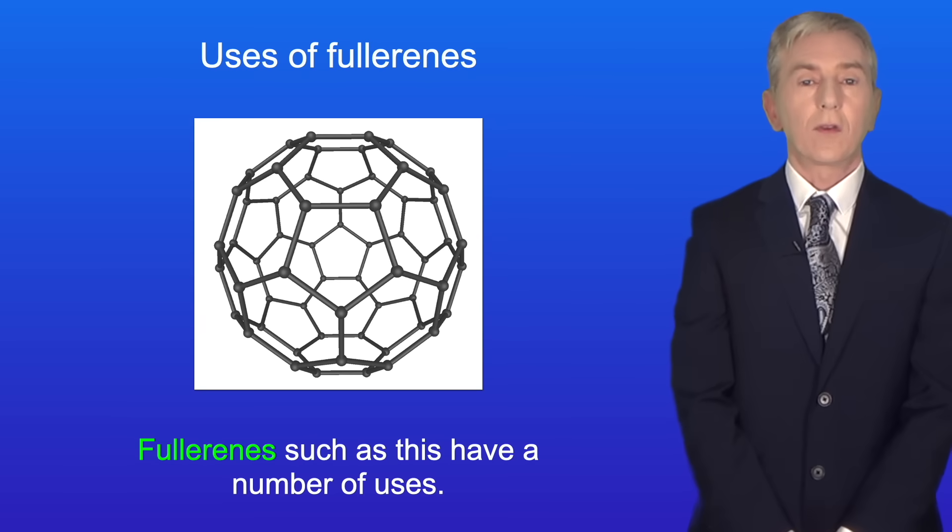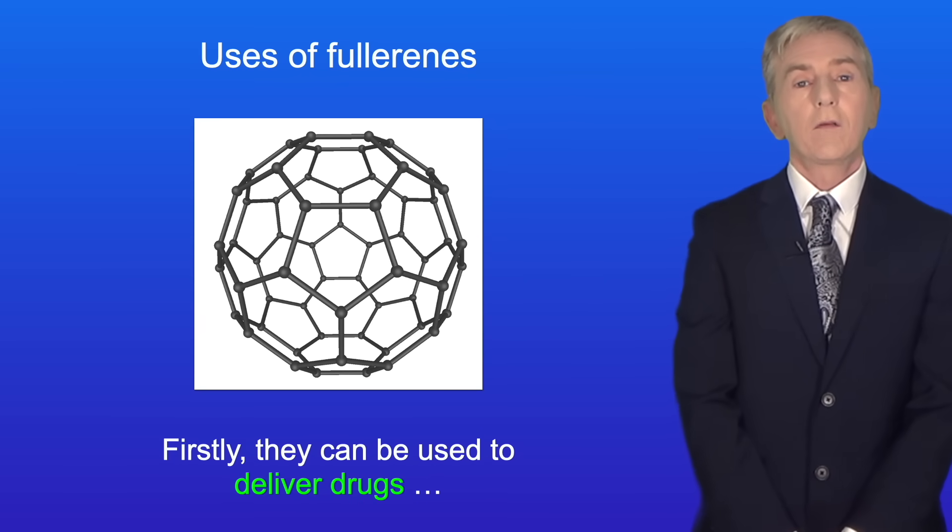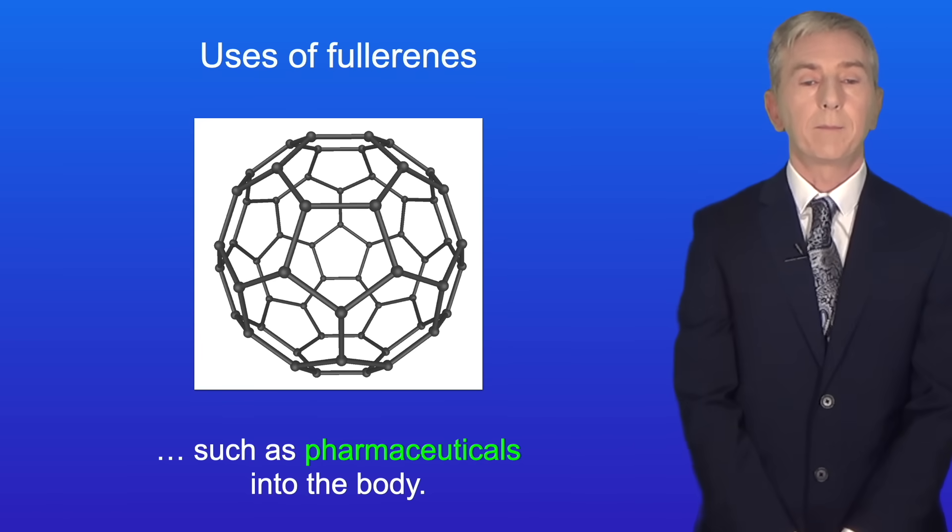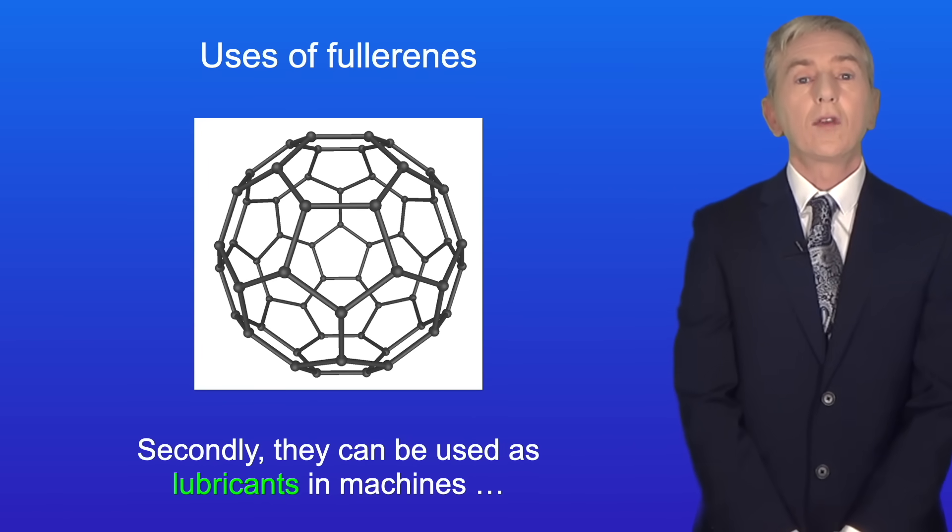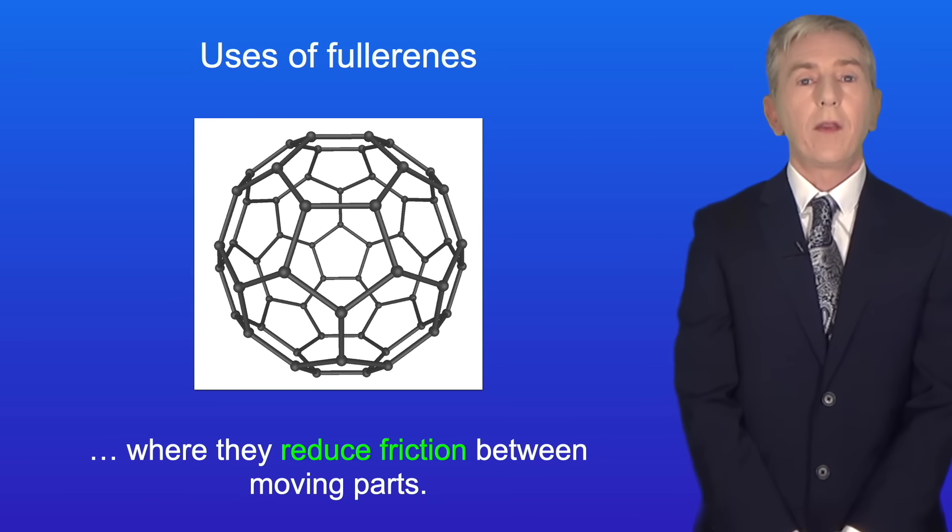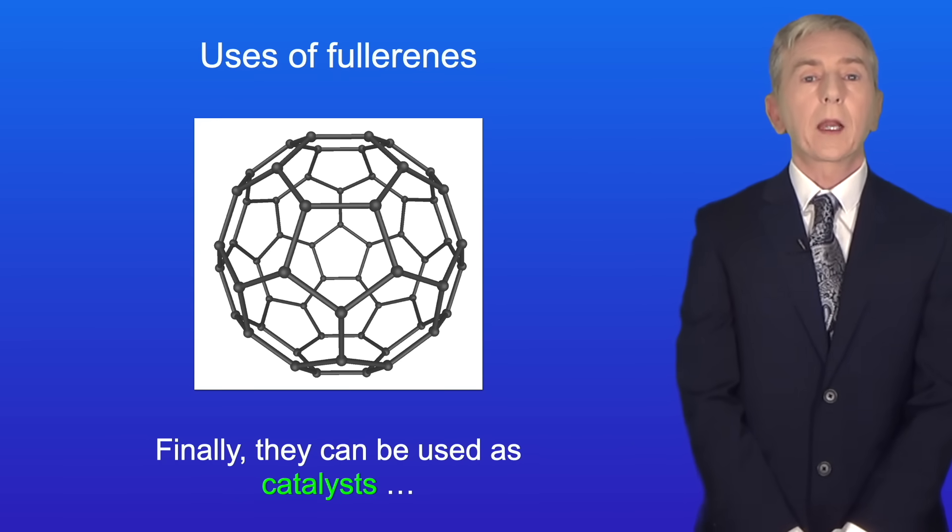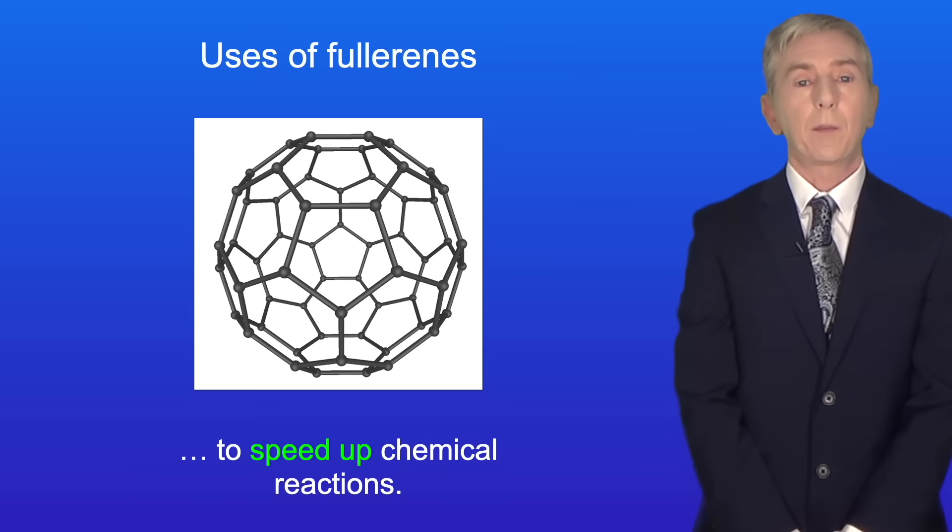Now fullerenes such as this have a number of uses. Firstly, they can be used to deliver drugs such as pharmaceuticals into the body. Secondly, they can be used as lubricants in machines where they reduce friction between moving parts. And finally, they can be used as catalysts to speed up chemical reactions.